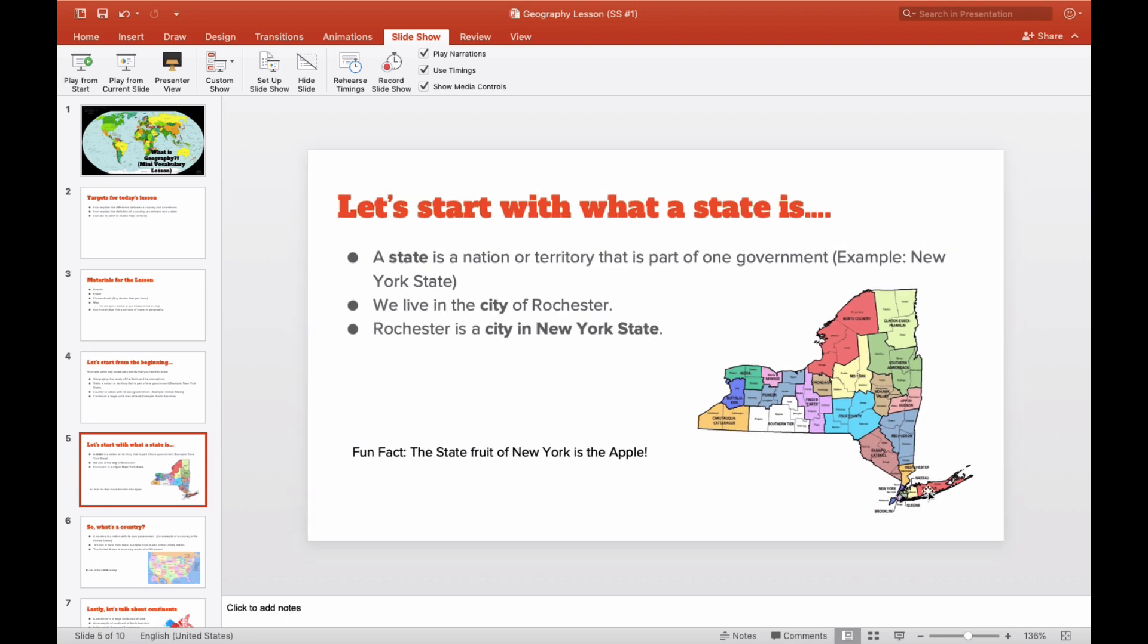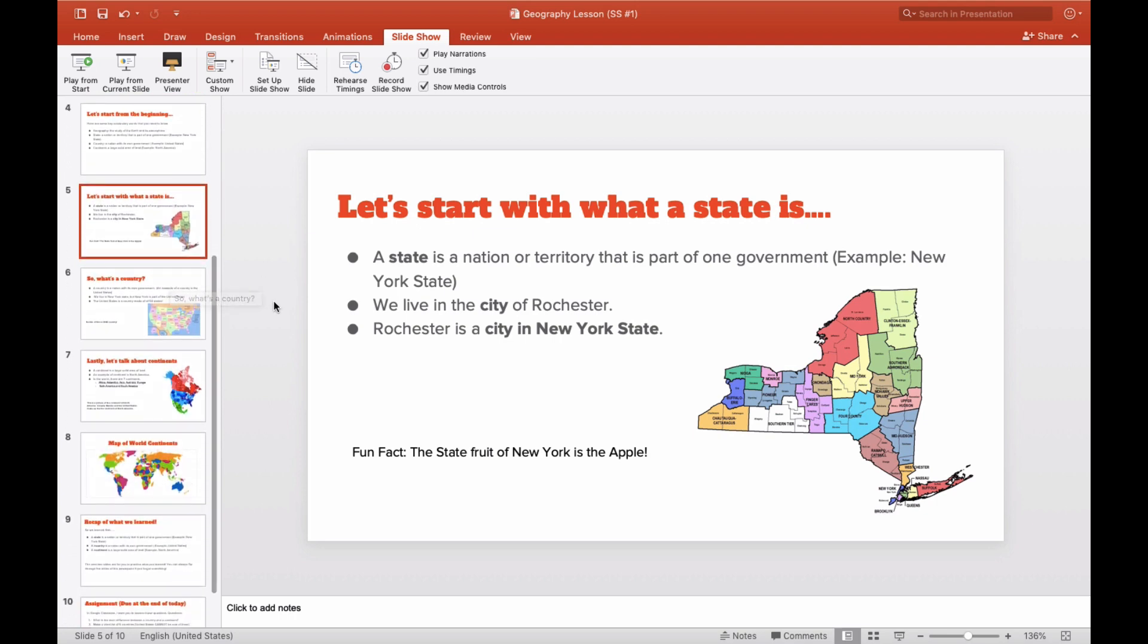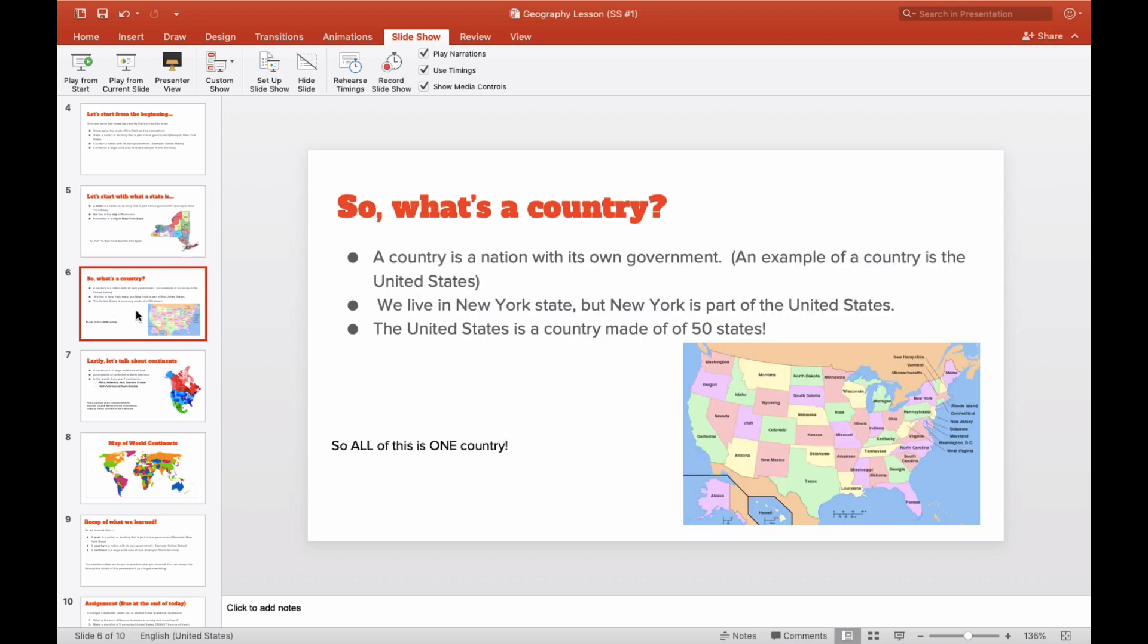If you go down here, this is where New York City is. So Brooklyn, Manhattan, the Bronx. That's all down here. And those are all cities. They're not states. They're all cities in the state of New York. So fun fact, the state fruit of New York is the apple. So every state in the United States has a fruit that represents them. So when you are eating an apple or you see an apple, think of New York. We are the apple state. So if you want to pause the video now and take down these notes, you can do so.